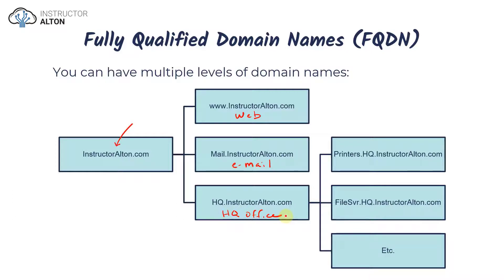The hq.instructoralton.com subdomain is associated with our headquarter office. Within that, we may have multiple devices — for example, a print server with its own subdomain: printers.hq.instructoralton.com, and a dedicated file server at fileserver.hq.instructoralton.com. We can create as many subdomains as we want. That's why DNS is important — whether you work in networking or any other area of IT, you're going to become familiar with these multiple levels of fully qualified domain names.